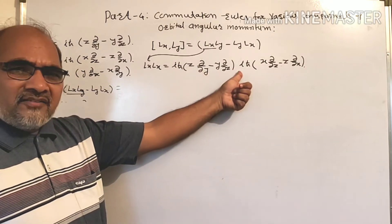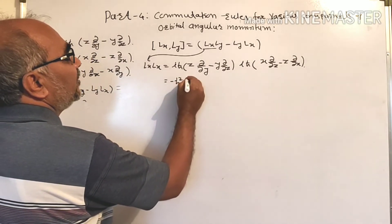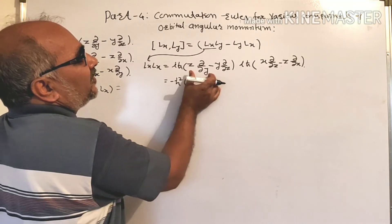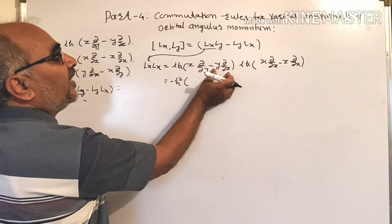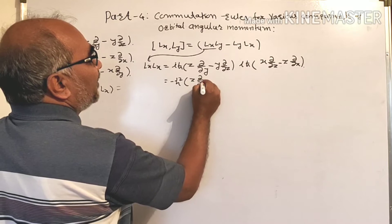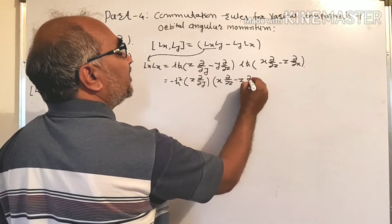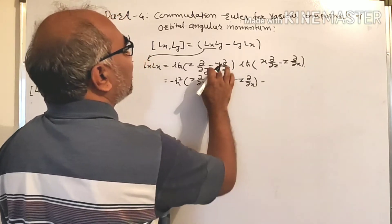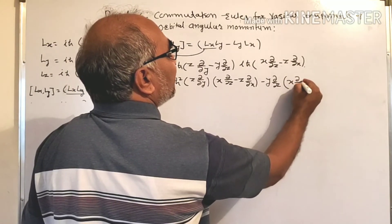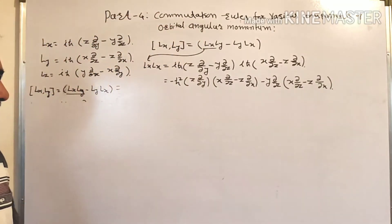Now i times i squared is minus 1, and ħ times ħ gives minus ħ². So this becomes −ħ² into bracket: z ∂/∂y into the second bracket, minus y ∂/∂z into the second bracket. Using the rule of multiplication, this is z ∂/∂y of (x ∂/∂z − z ∂/∂x), minus y ∂/∂z of (x ∂/∂z − z ∂/∂x).